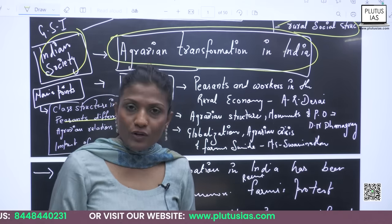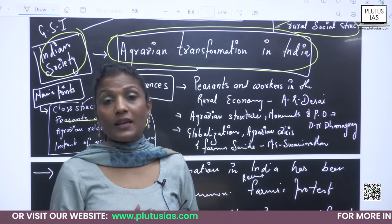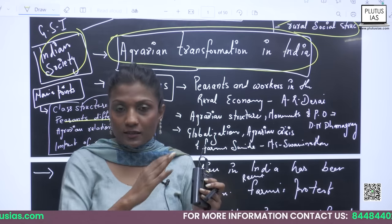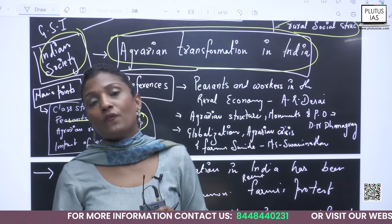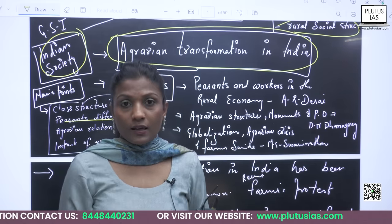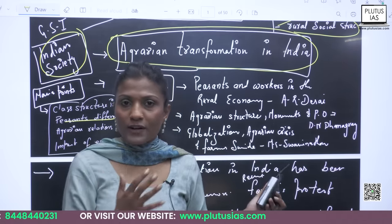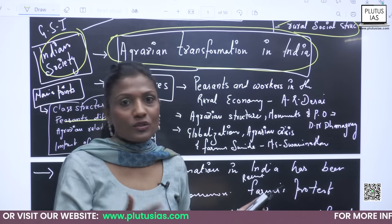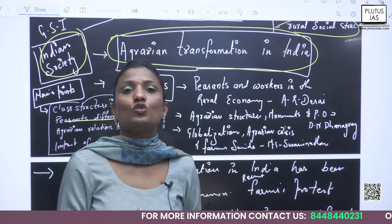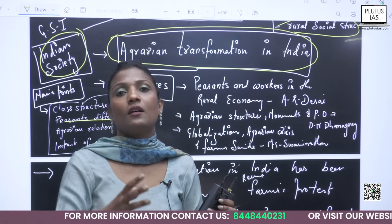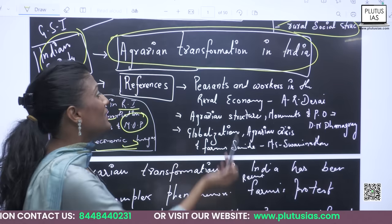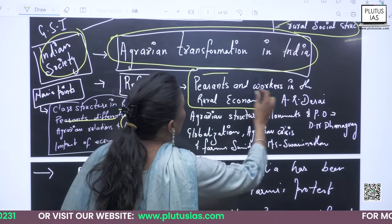It is really very important to articulate your answer correctly. When identifying these important dimensions, you need to give references. All these issues have already been studied — some agriculturalists, political economists, and sociologists have studied them. So you can refer to some reports and some thinkers' work. For instance, on peasants and workers in the rural economy.